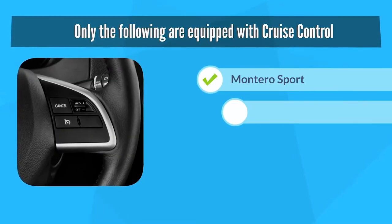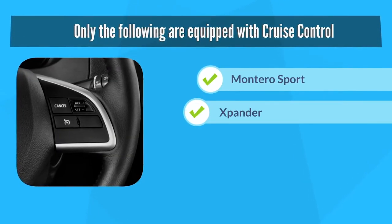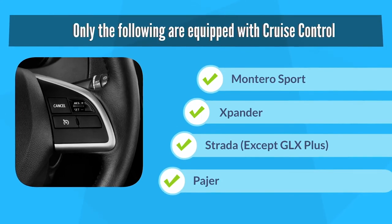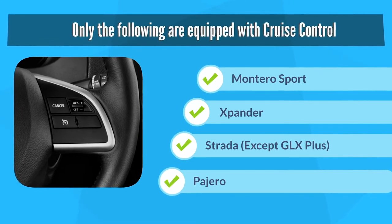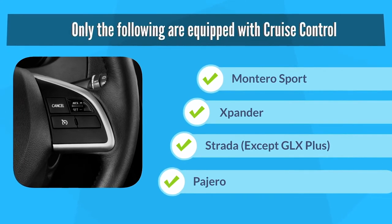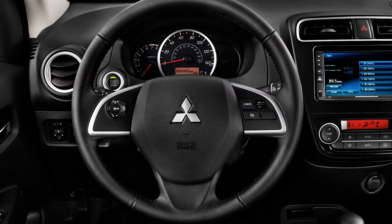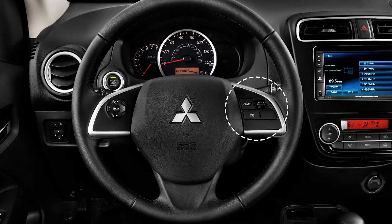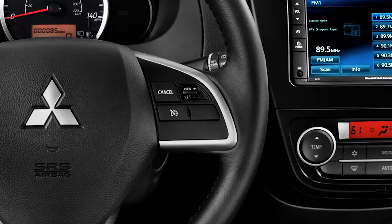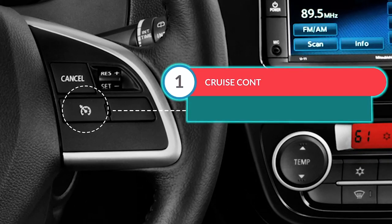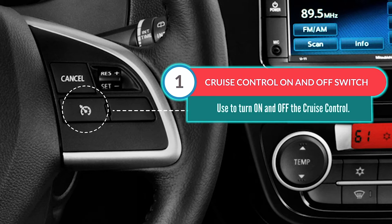Only the following are equipped with Cruise Control. Cruise Control switches are located at the right portion of the steering wheel. Use the on-off switch to turn on and off the Cruise Control.